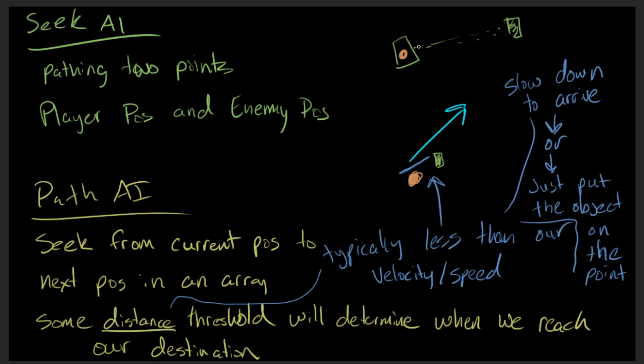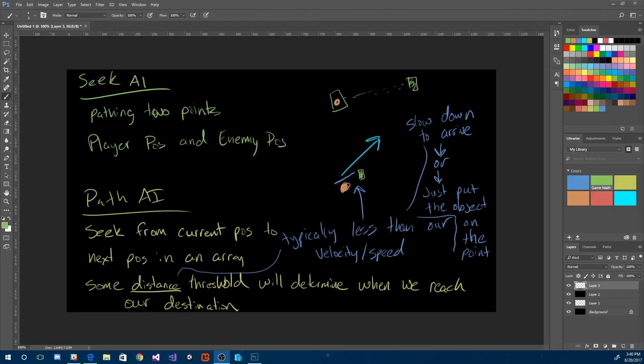Alright, so that was it for this video — it's been a couple of months, I think March was the last time I released a video. So this is the concept of path AI: we seek from our current position to the next position in an array, use a distance threshold to determine when we reach our position, then go to the next position in the array and repeat the process. I hope you enjoyed it — stay tuned for the next video in another few weeks.